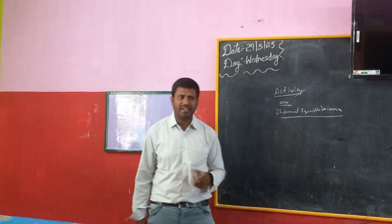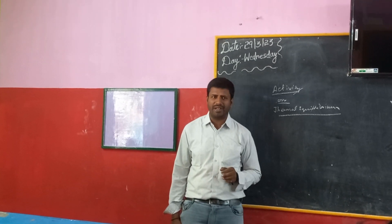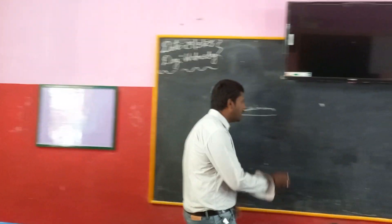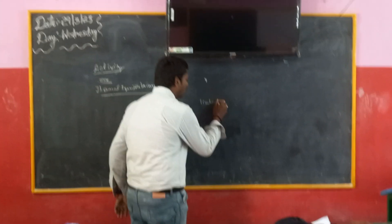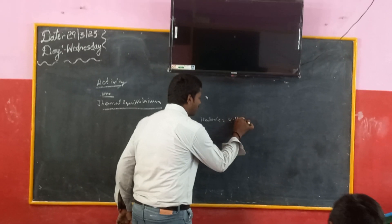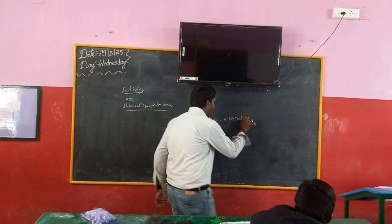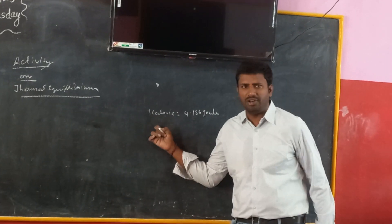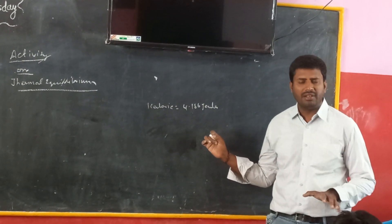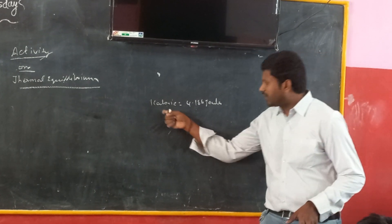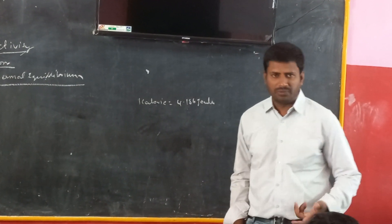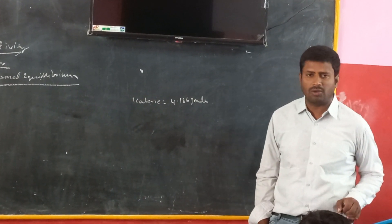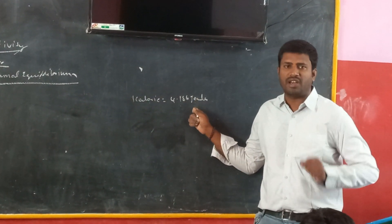Now, units of heat: the SI unit of heat is Joule, and the CGS unit of heat is Calorie. One Calorie is equal to 4.186 Joules. Joule is the SI unit of heat.